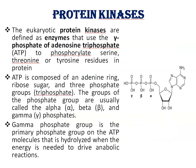Eukaryotic protein kinases are defined as enzymes that use the gamma phosphate of ATP to phosphorylate serine, threonine, or tyrosine residues in proteins, because phosphorylation mainly occurs at these residues.